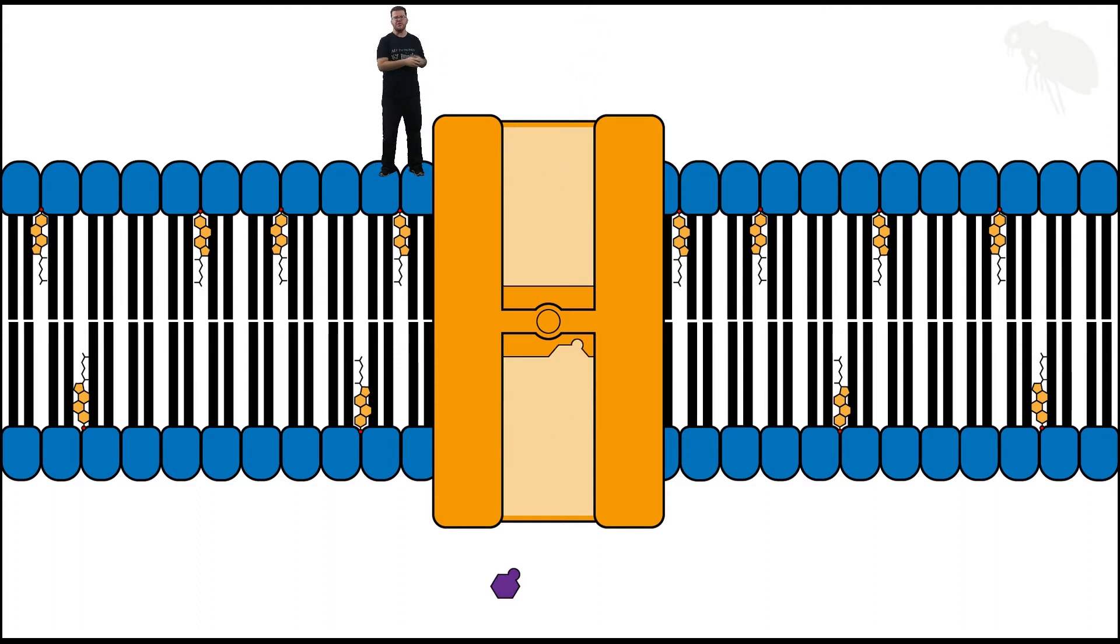In the case of the carrier protein, the substance moving through it has to bind to it, interact with it, and then move through it—exactly like a revolving door. You have to engage the mechanism of the door; the door has to translocate so that you can move through to the other side. And the importance of this is that revolving doors, carrier proteins, are subject to saturation. They have limits as to how many particles can be moved at a time.